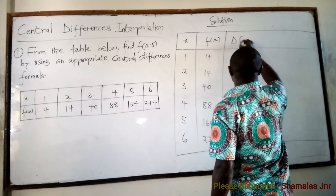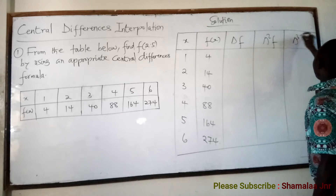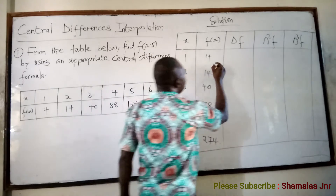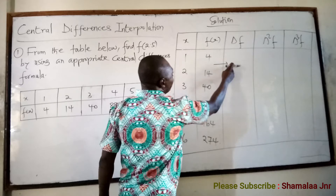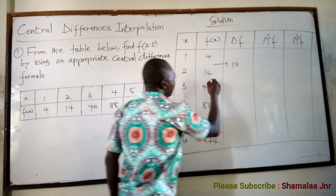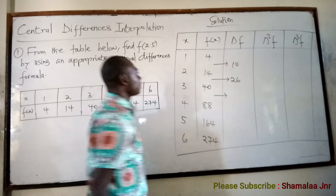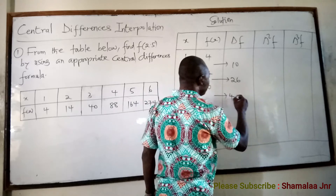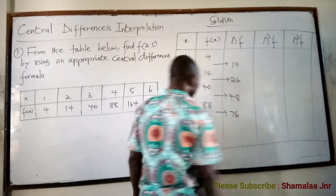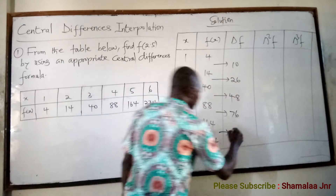Now we have delta f, delta squared f, and delta cubed f. To get the first differences: 14 minus 4 is 10, 40 minus 14 is 26, 88 minus 40 is 48, 164 minus 88 is 76, and 274 minus 164 is 110.